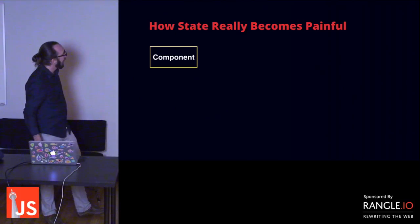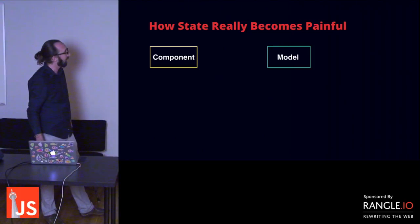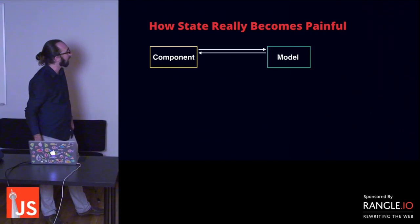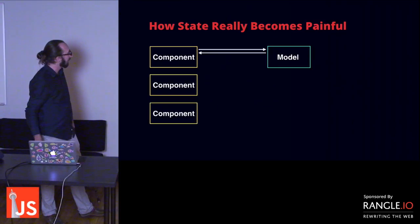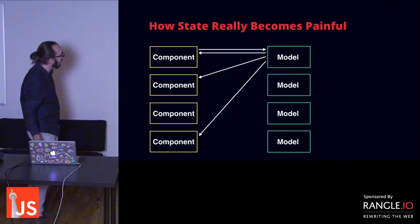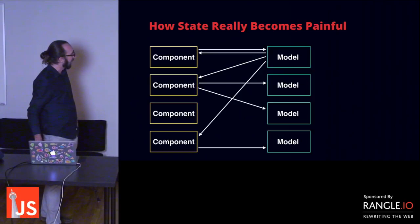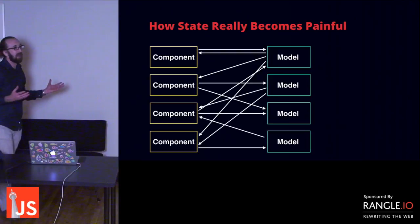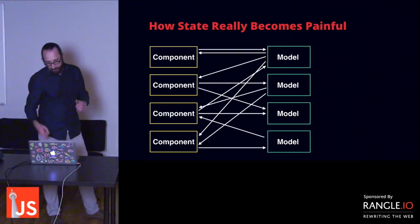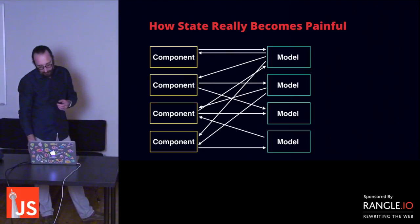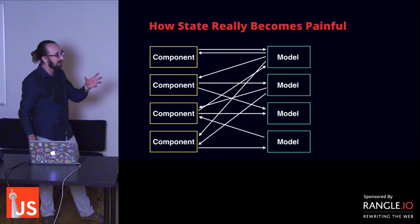Imagine you have a component and a model — classic MVC. The component sends information to change the model, the model sends updates back, and the component reflects them. This is easy until you get a second component, a third, a fourth, and then a bunch of models. This model affects this component, which also affects another component, which wants to change that model — and it starts getting very painful. You never really become sure which state is synchronized and which is not. The solution that emerged recently is called unidirectional data flow, and the common realization of it is called Flux.